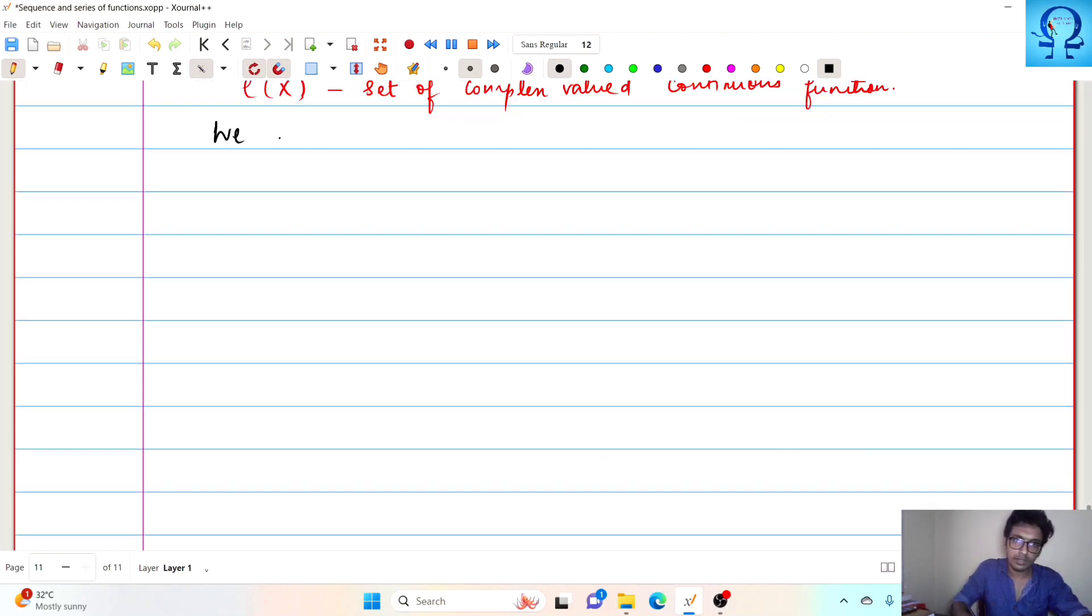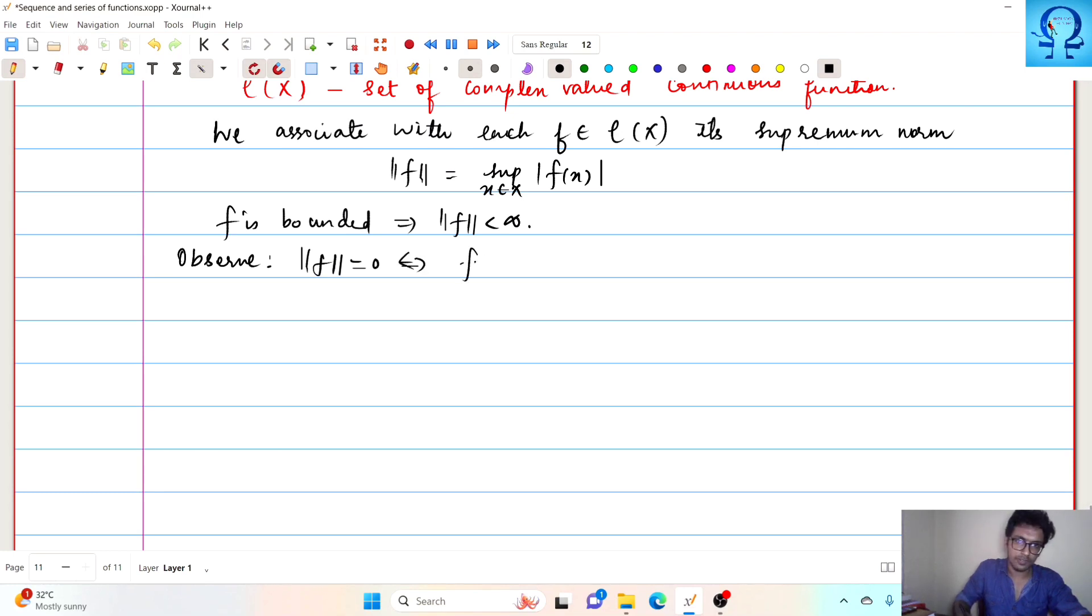Now we associate with each f in this script C of X its supremum norm, that is norm of f is supremum of absolute f of x for all x in X. Since f is assumed to be bounded, this means that norm of f is smaller than infinite. And observe norm of f is 0 if and only if f of x is 0 for all x in X.